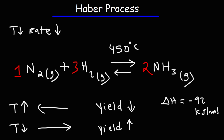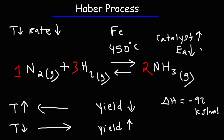Another thing that is useful to increase the rate of the reaction in this process is the use of a catalyst. This reaction uses an iron-based catalyst. Whenever you use a catalyst, it will lower the activation energy, allowing the reaction to proceed at a rapid rate but at a much lower temperature. So the addition of the catalyst will increase the rate of this chemical reaction.